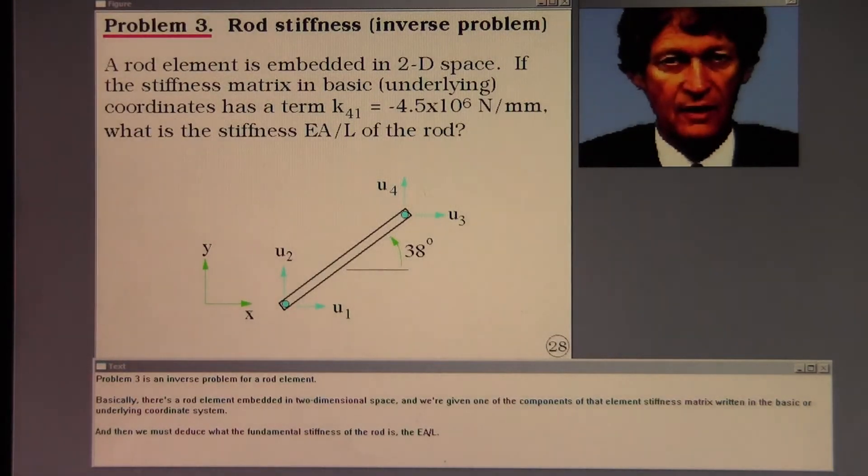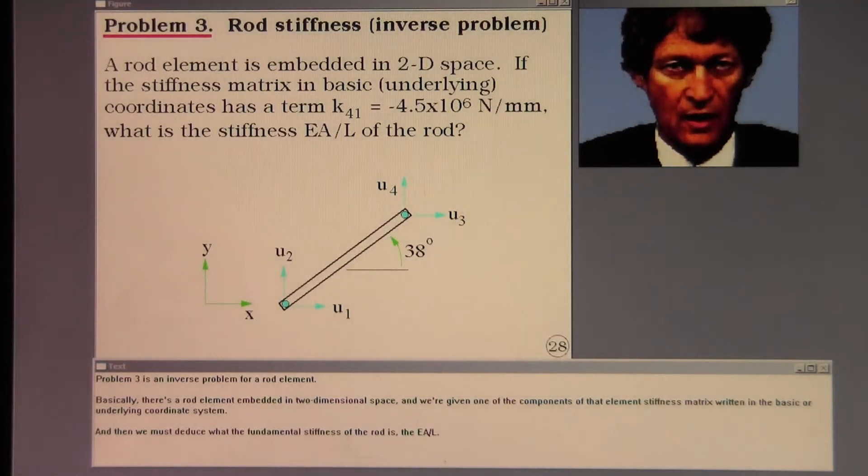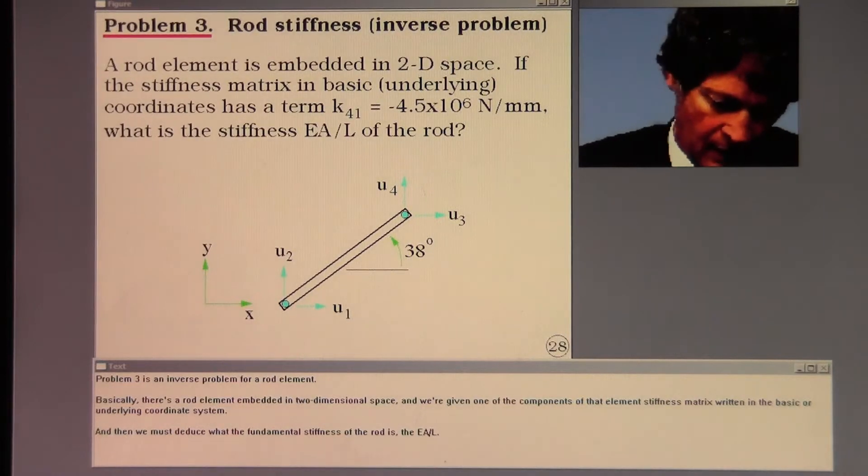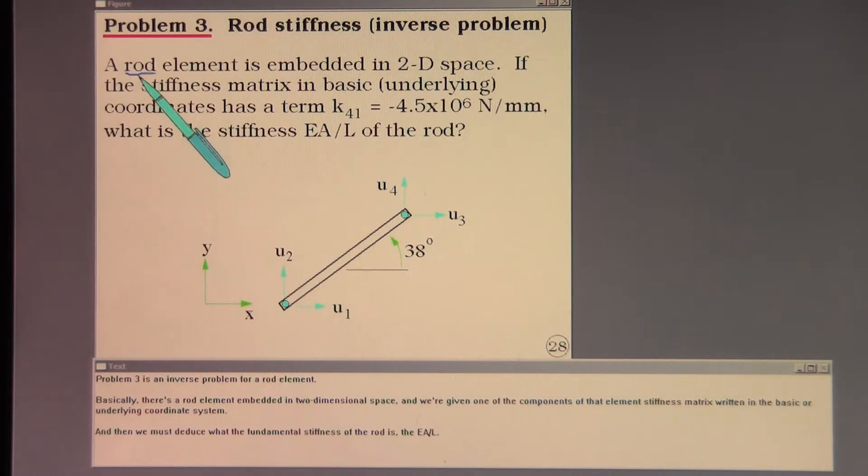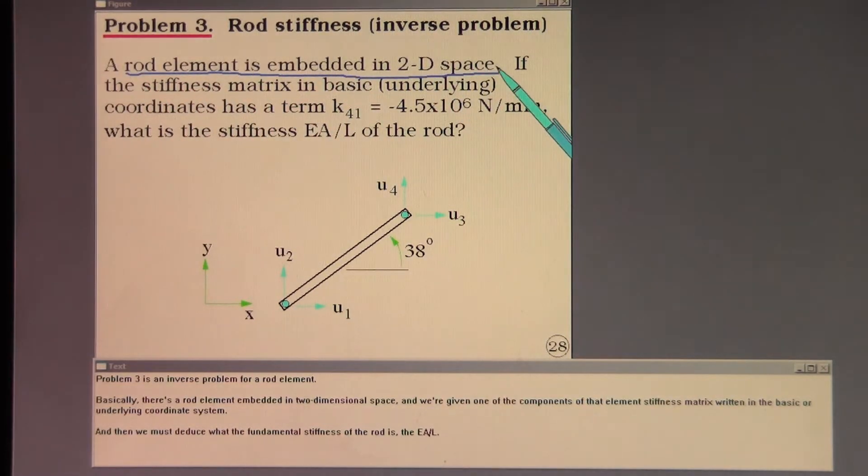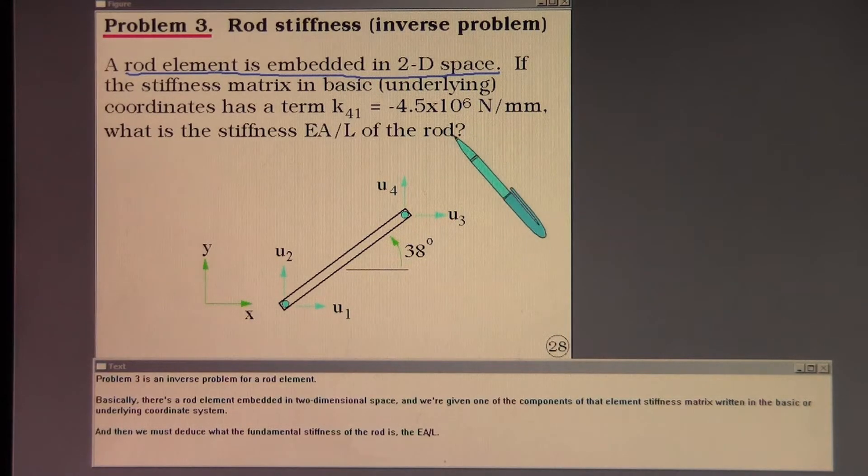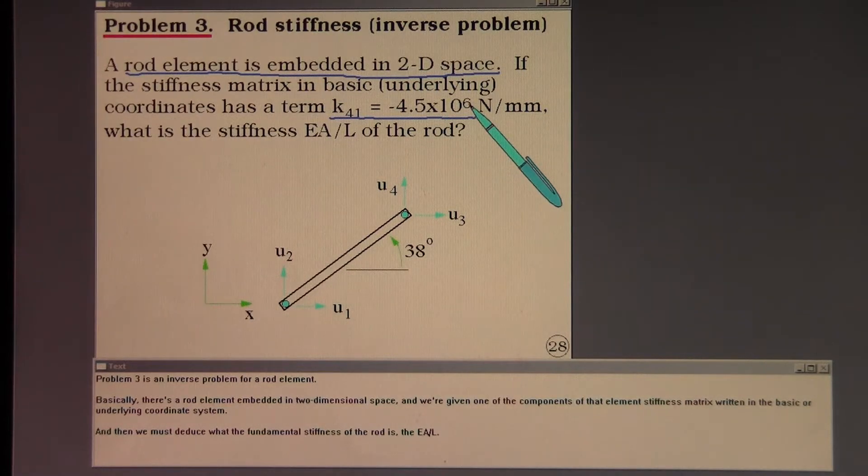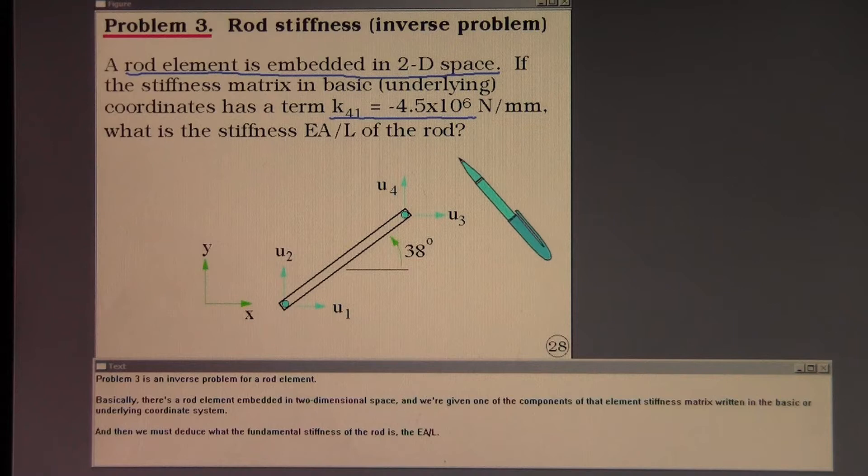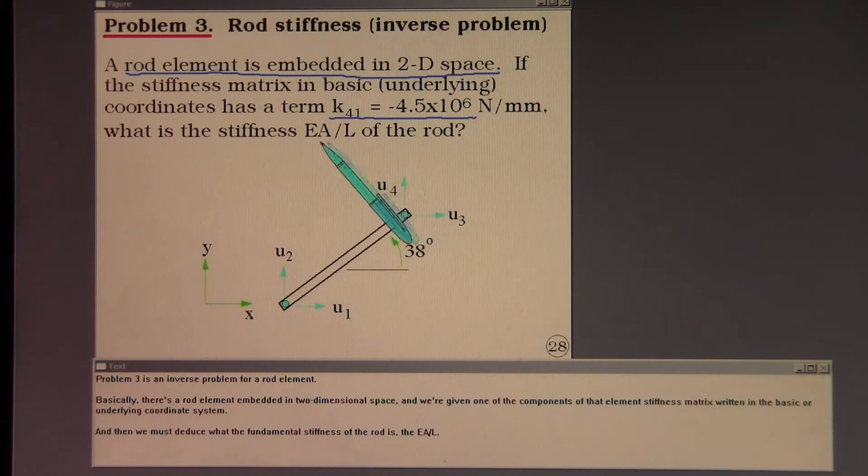Problem 3 is an inverse problem for a rod element. A rod element is embedded in two-dimensional space, and we're given one of the components of that element's stiffness matrix written in the basic underlying coordinate system. We must deduce what the fundamental stiffness of the rod is, the EA over L.